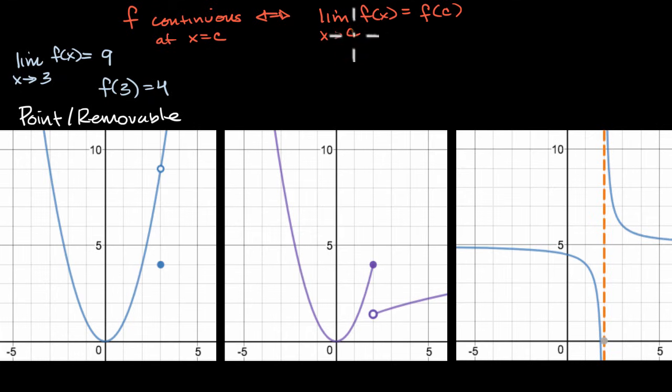So this is a situation where this two-sided limit exists, but it's not equal to the value of that function. You might see other circumstances where the function isn't even defined there. And so once again, the limit might exist, but the function might not be defined there. So in either case, you aren't going to meet this criteria for continuity.